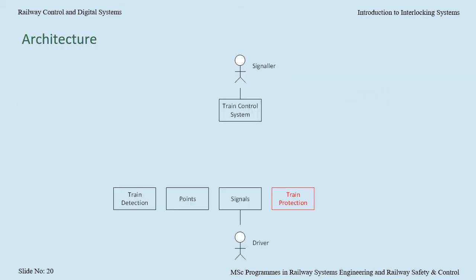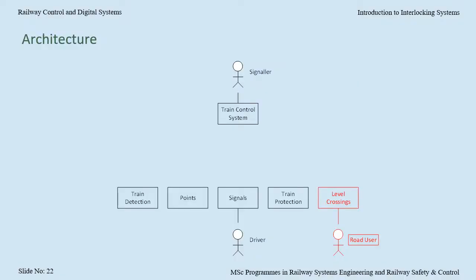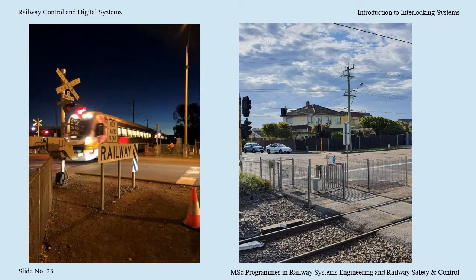There could also be train protection systems to mitigate the risk of a train exceeding its movement authority. There are many systems, such as train stops or TPWS. There are also the means by which the railway control system communicates with road users at level crossings. This could include bells, flashing lights and booms, and pedestrian gates.